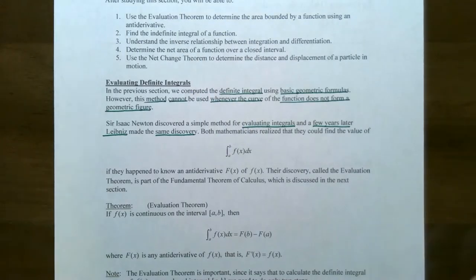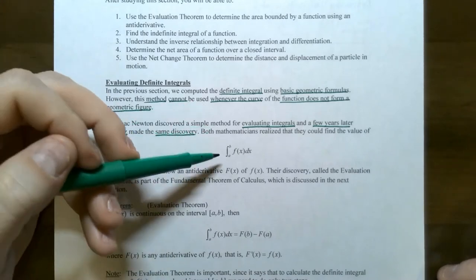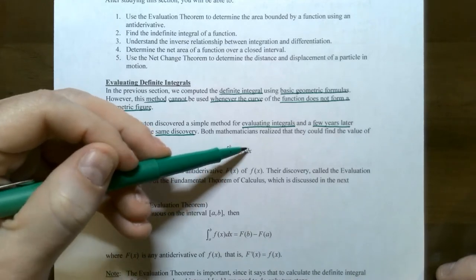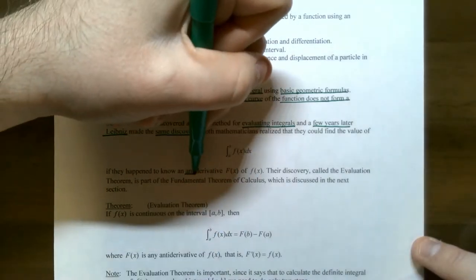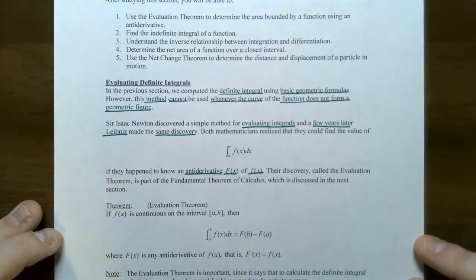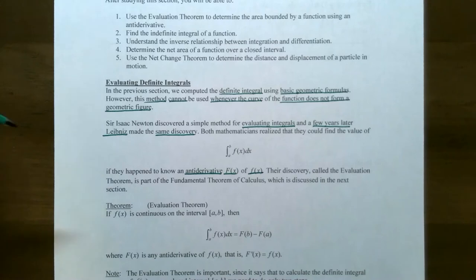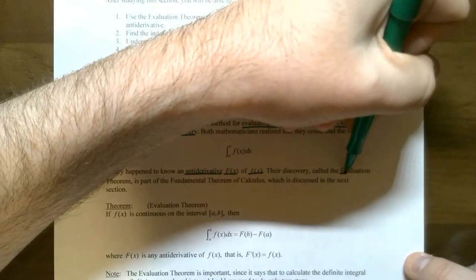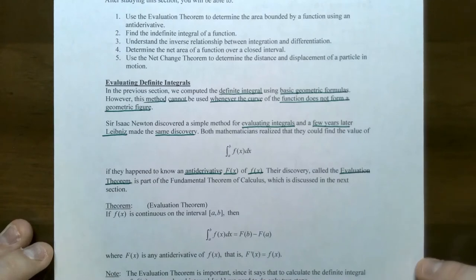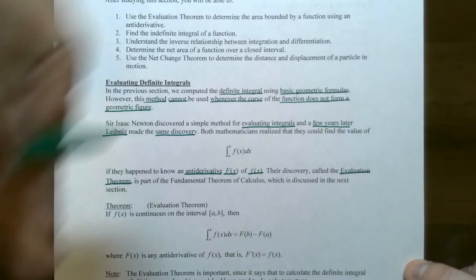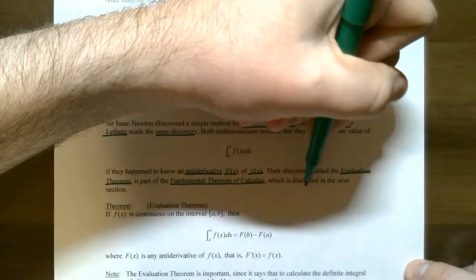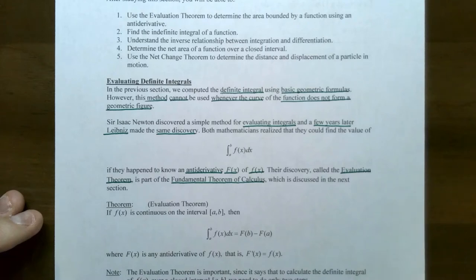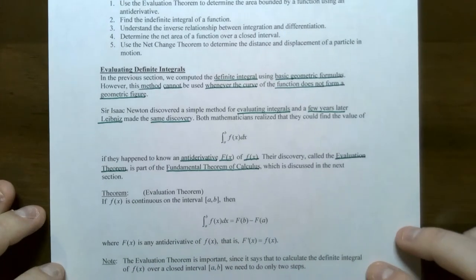Both mathematicians realized they could find the value of the definite integral from x equals a to x equals b as the limits of integration, where f of x is the integrand and x is the variable of integration, if they knew an antiderivative capital F of x of the integrand. So if you just know one antiderivative, Newton and Leibniz both figured out that you can find the value of the definite integral to give you the area under the curve. This is called the evaluation theorem, or what others usually call the fundamental theorem of calculus version one.